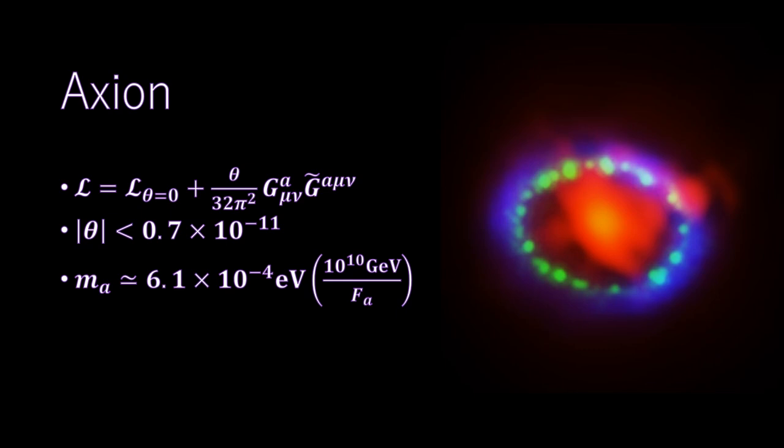They introduced a new symmetry called Peccei-Quinn, PQ, symmetry, regarded theta as a scalar field, and obtained theta equals zero as the solution with the minimum potential. In this model, the PQ symmetry breaks at a certain scale of energy F, which produces scalar particles known as Nambu-Goldstone bosons. These scalar particles are axions.